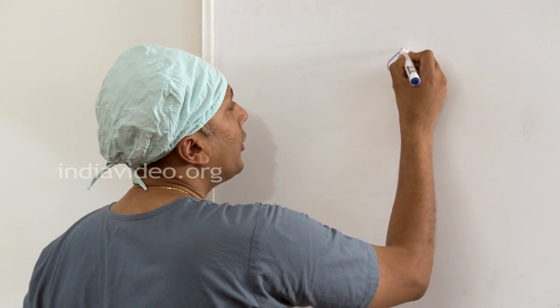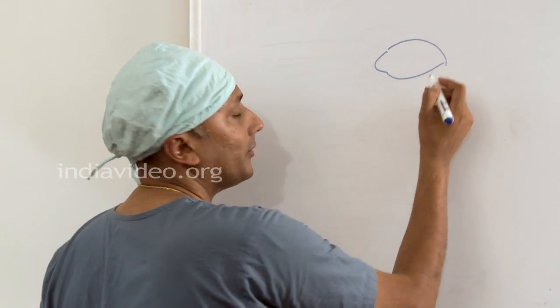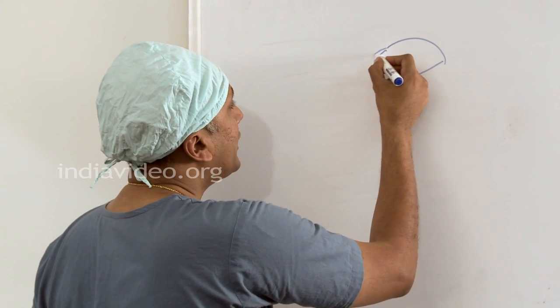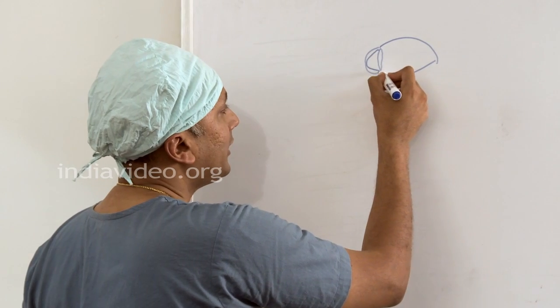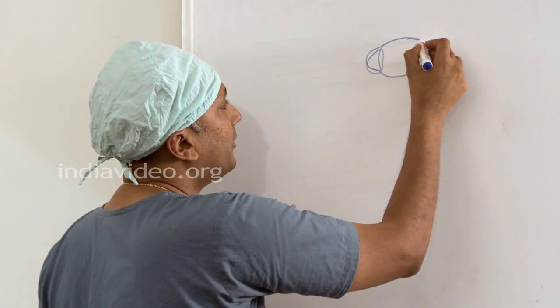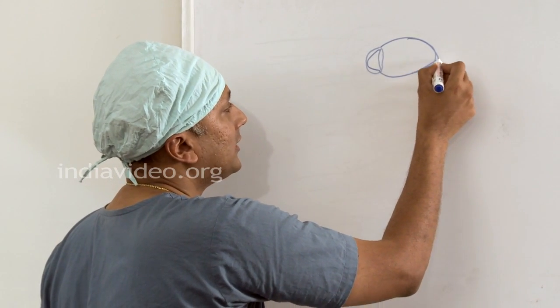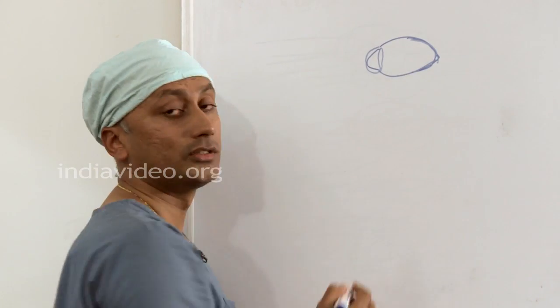If you consider a cross-section of the normal eye, it looks like a ball. In front of the eye is the cornea and inside is the focusing part of the eye called the lens, and at the back part of the eye is the retina or the nerve that helps us to see very clearly.